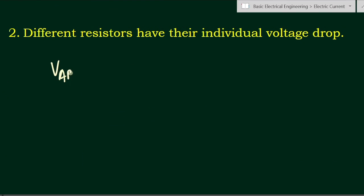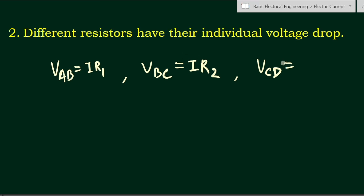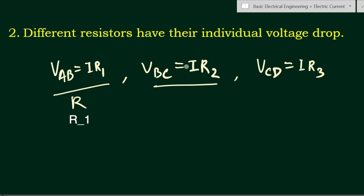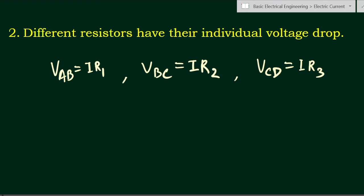Applying Ohm's Law: Vab equals I·R1, Vbc — the voltage drop across resistance R2 — equals I·R2, and Vcd equals I·R3. We have now found out the individual voltage drops across all three resistors R1, R2, and R3.